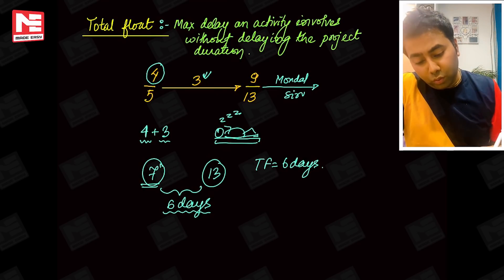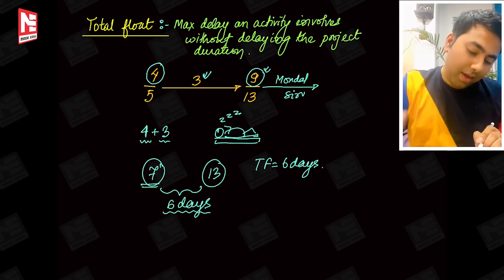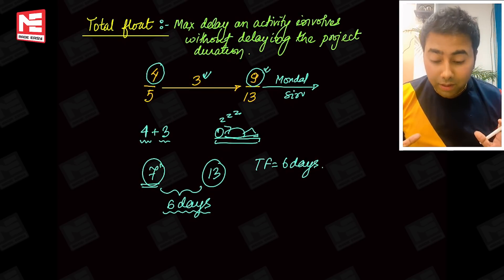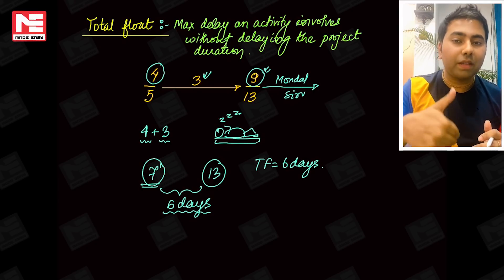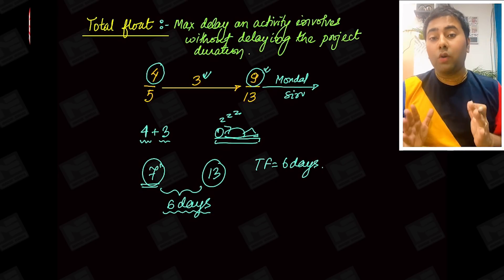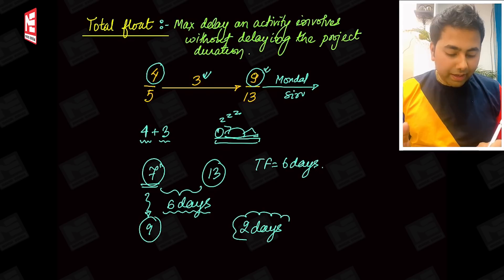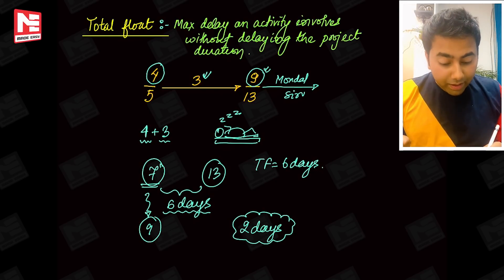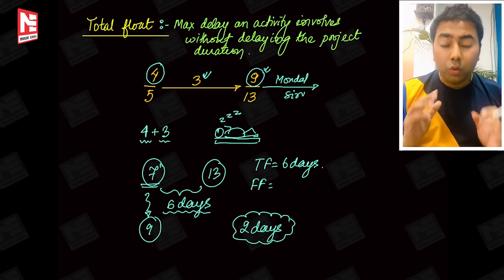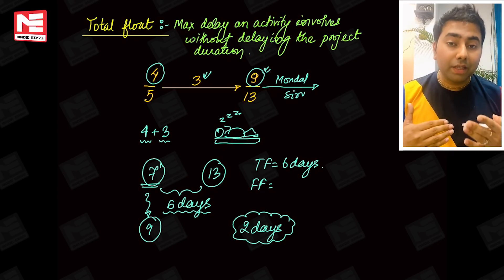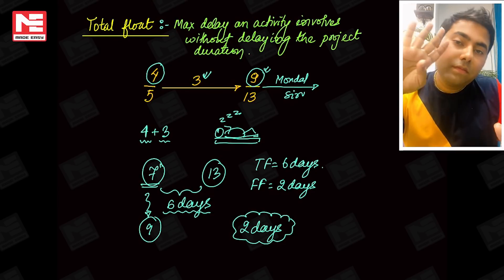Now there's a situation where we tell Mondel sir: whatever delay you take, I will start class from the 9th. So now how many days of rest am I given? I started class on the 4th, and it takes me 3 days, so by the 7th my class is complete at my own pace. If sir must start class on the 9th, then I have only 2 days of delay left. That 2-day allowance I can take — that is the free float. When the head event starts at its earliest date, whatever allowance still remains for delay — that is the free float. That is two days.